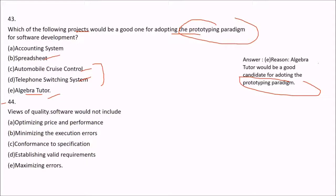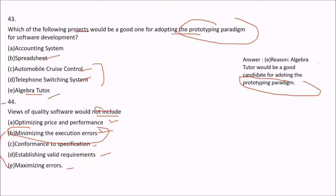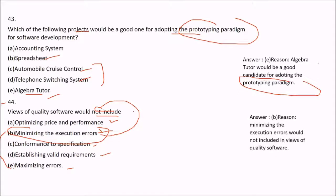Question 44: Views of quality software would not include which of the following? Options are: A — optimizing price and performance (included), B — minimizing execution errors, C — conformance to specification (yes), D — establishing valid requirements (yes), E — maximizing errors. Minimizing errors and maximizing errors are contradictions. The answer is B — minimizing execution errors is not a view of quality software.